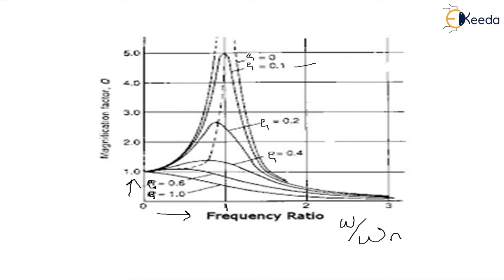Now the reasons for not being infinite is because there are certain damping factors always present in the system which does not make the magnification factor infinite. And secondly, no machine can have the amplitude of infinity because it has got certain limits.